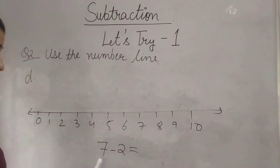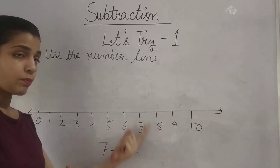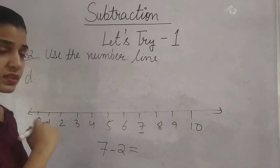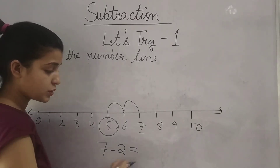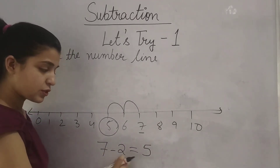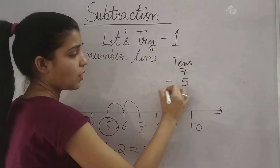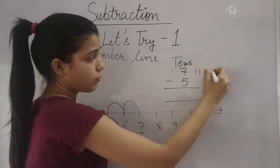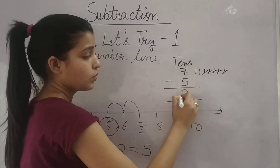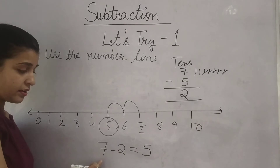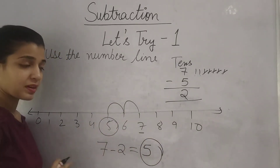Now you have to subtract 7 minus 2 — subtract 2 from 7. Find 7 on the number line; it's here. Go back 2 steps: 1, 2. The answer is 5 — 7 minus 2 is 5. You can also use lines: draw 7 lines, cross out 2, and count the rest: 1, 2, 3, 4, 5. So 7 minus 2 is 5.